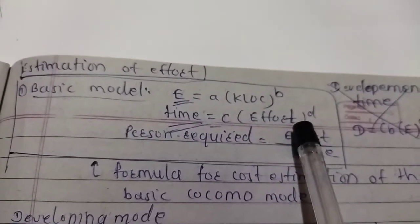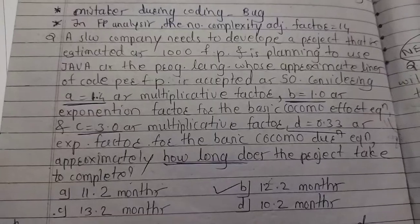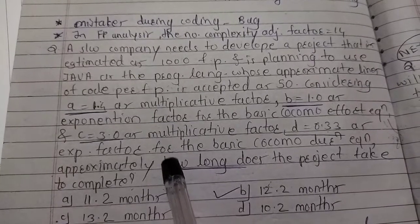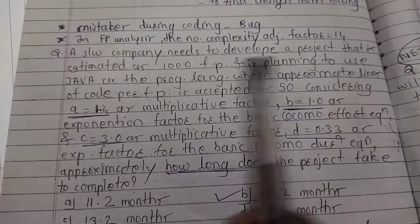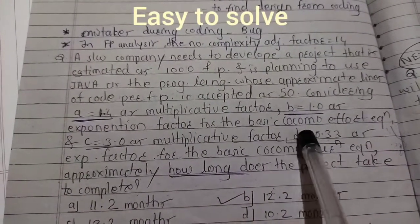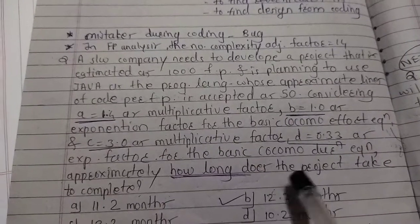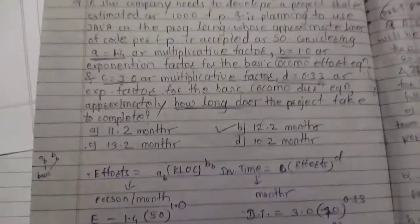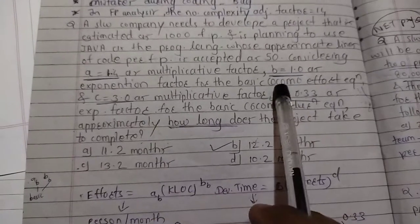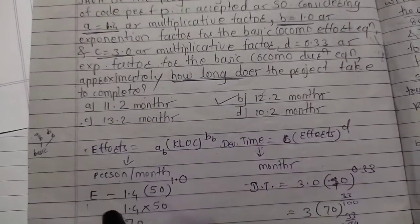Here is a previous year numerical based on the COCOMO model asked in SET and NET exams. A software company needs to develop a project estimated at 1000 function points, with lines of code given as 50 per function point. Constants A and B, and C and D, are also given. We have to calculate how long the project takes to complete — the time required. Using the formula: Effort E = A × (KLOC)^B, where A and B are given and KLOC is the number of lines of code, which is 50 here.